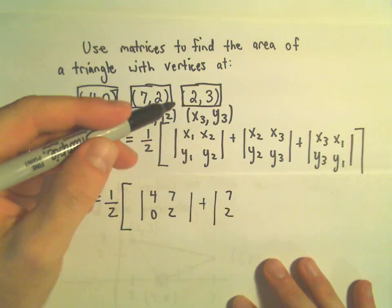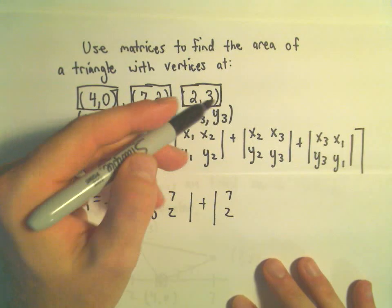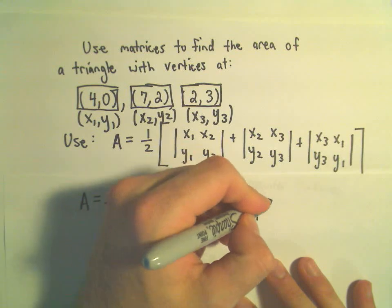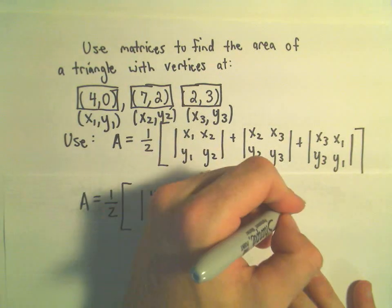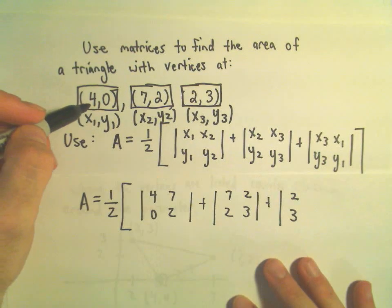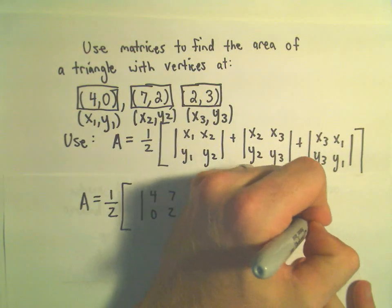Again x₂,y₂, x₃, and y₃, that's going to be 2 and 3. And then our last x₃ and y₃, that will be 2 and 3. x₁ and y₁ will be our point 4 and 0.